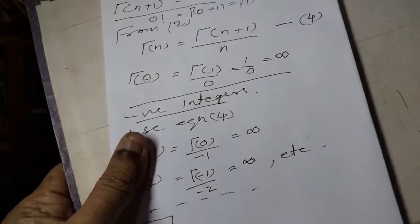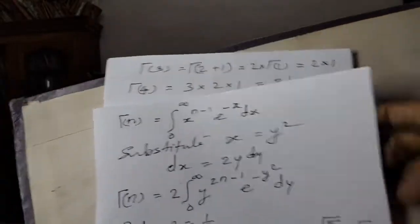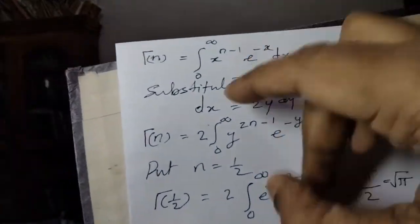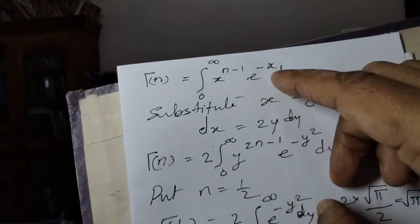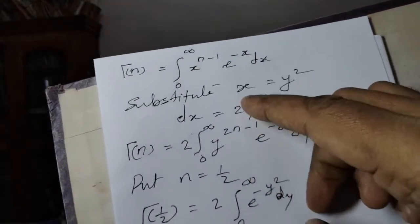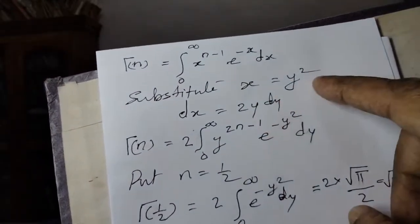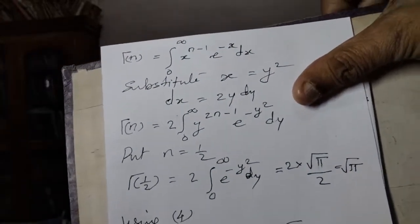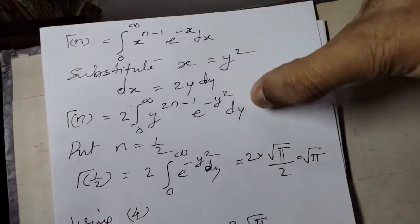Now computing gamma(1/2). Starting from the gamma function definition: gamma(n) equals the integral from 0 to infinity of x raised to n minus 1 times e raised to minus x, dx. Using the substitution x equals y squared, so dx equals 2y dy, gamma(n) becomes 2 times the integral from 0 to infinity of y raised to 2n minus 1 times e raised to minus y squared, dy.